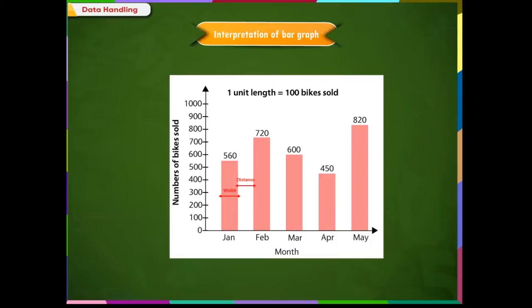It is clear from the bar graph that sale of bikes was the maximum in the month of May. Sale of bikes was the least in the month of April. The sale of bike exceeded in the month of Feb by 60 as compared to the sale of bikes in January.